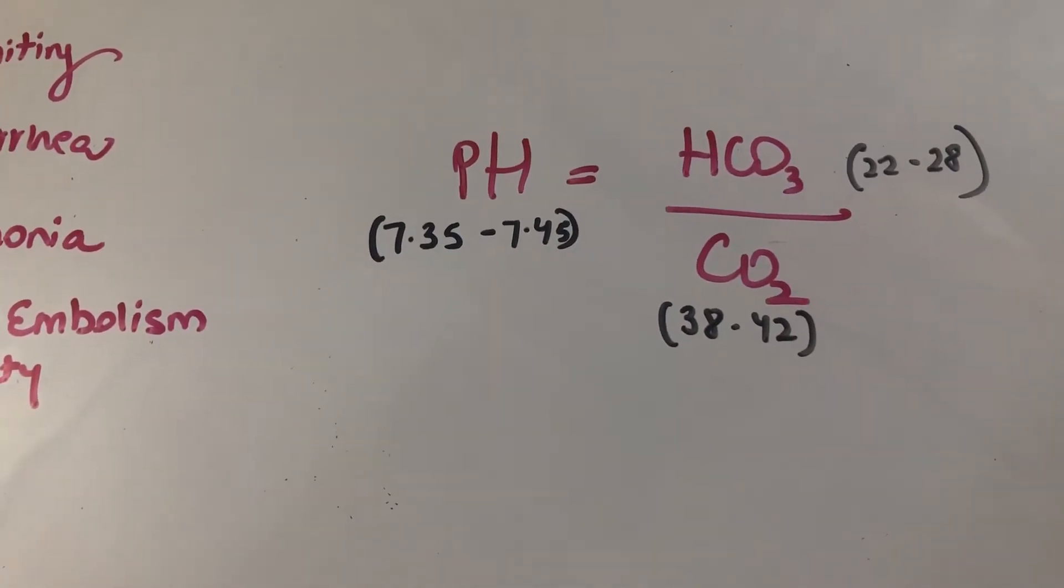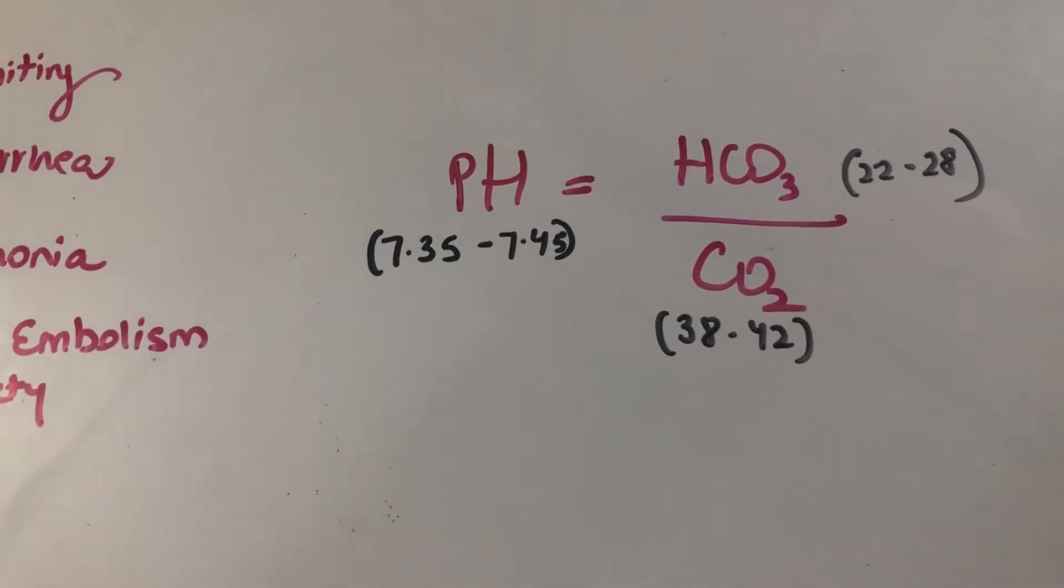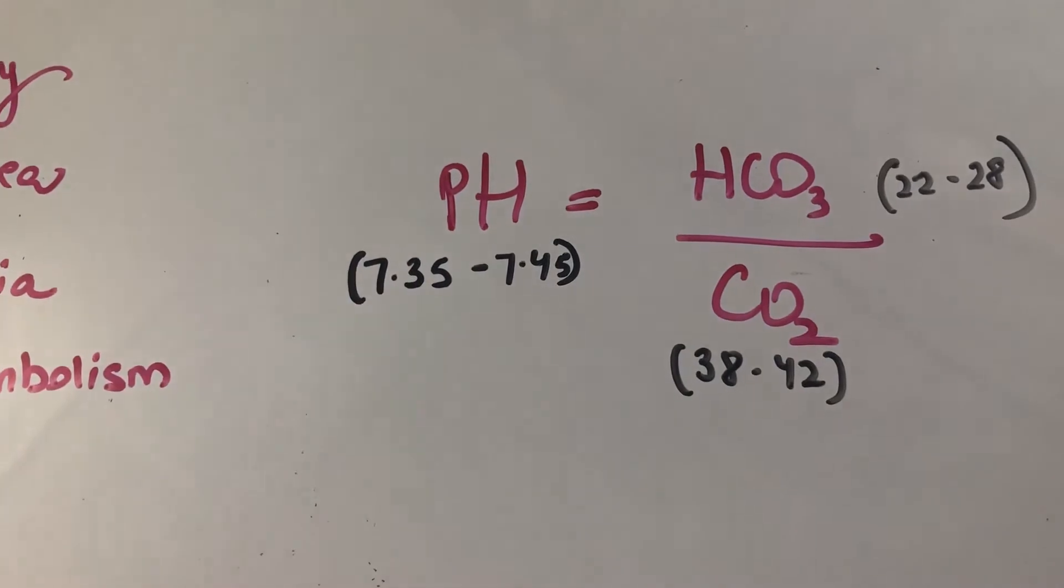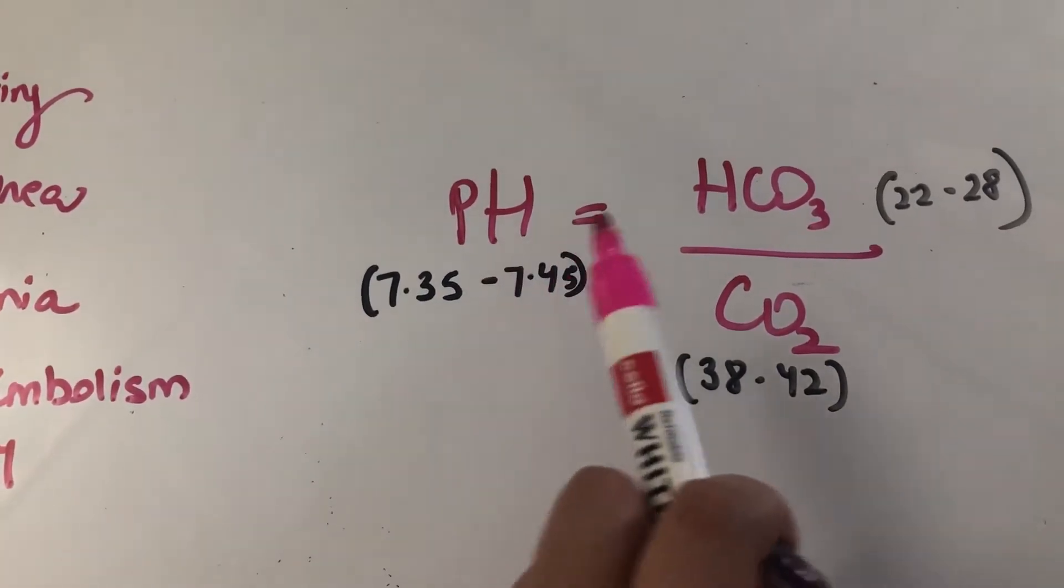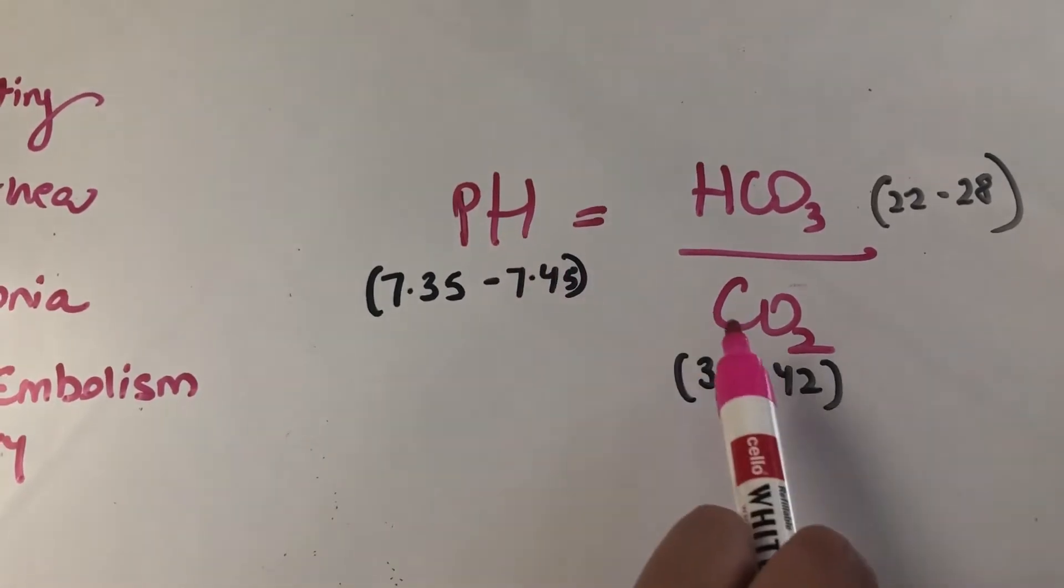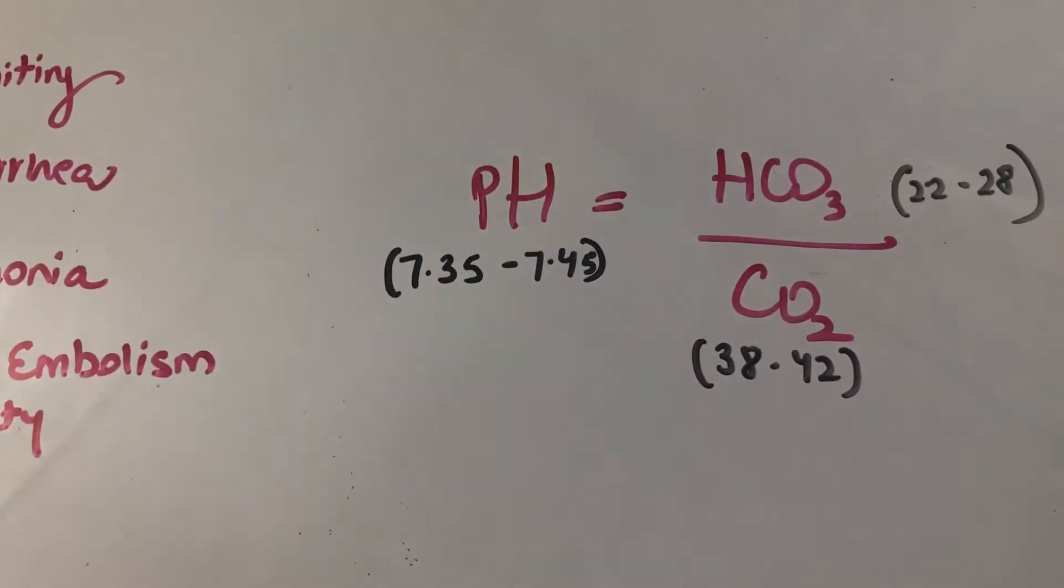Hey guys, so this video is about how to do an acid-base question super quick, and we will do that using this little thing right here. And this says that the pH of your blood is directly proportional to the levels of bicarbonate and inversely proportional to the levels of CO2, or the partial pressure of carbon dioxide in the arterial blood.